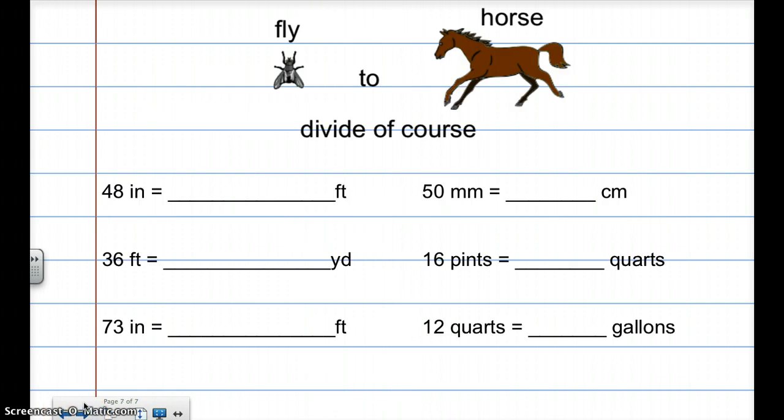All right, let's move on to our conversions. So we have fly to horse, divide of course. Horse to fly, multiply. So I'm going to do just fly to horse right now, which is divide of course.